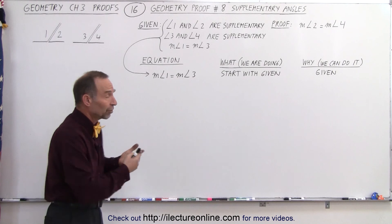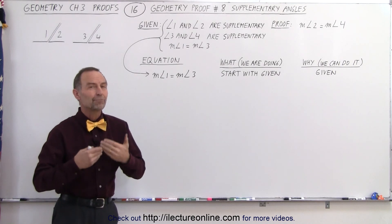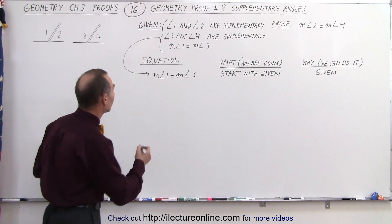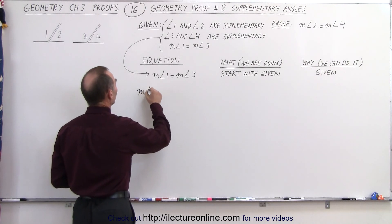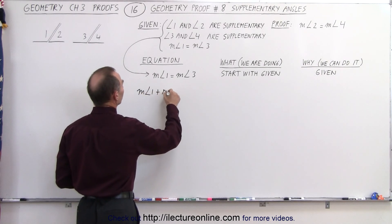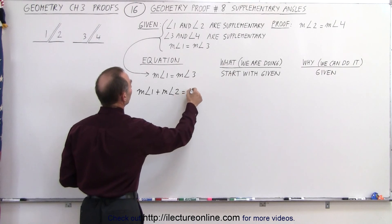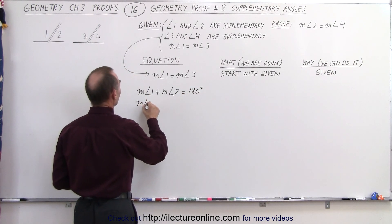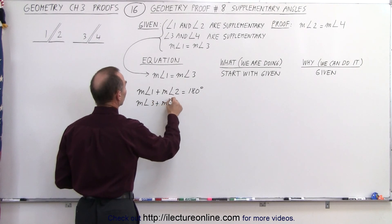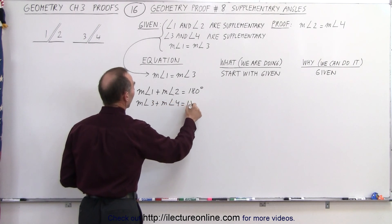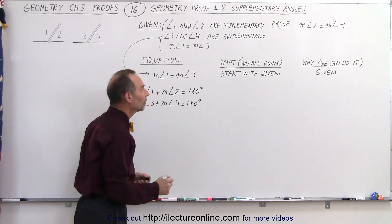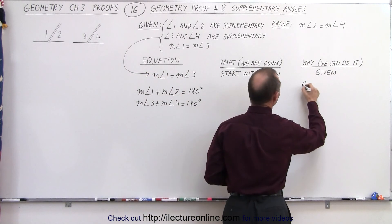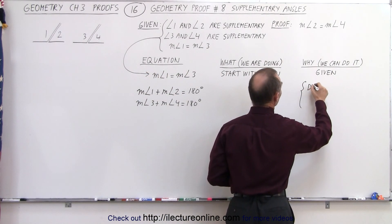The fact that angle 1 and angle 2 are supplementary angles means their measures must add up to 180 degrees. So we can say the measure of angle 1 plus the measure of angle 2 equals 180 degrees. Similarly, the measure of angle 3 plus the measure of angle 4 equals 180 degrees — by the definition of supplementary angles.